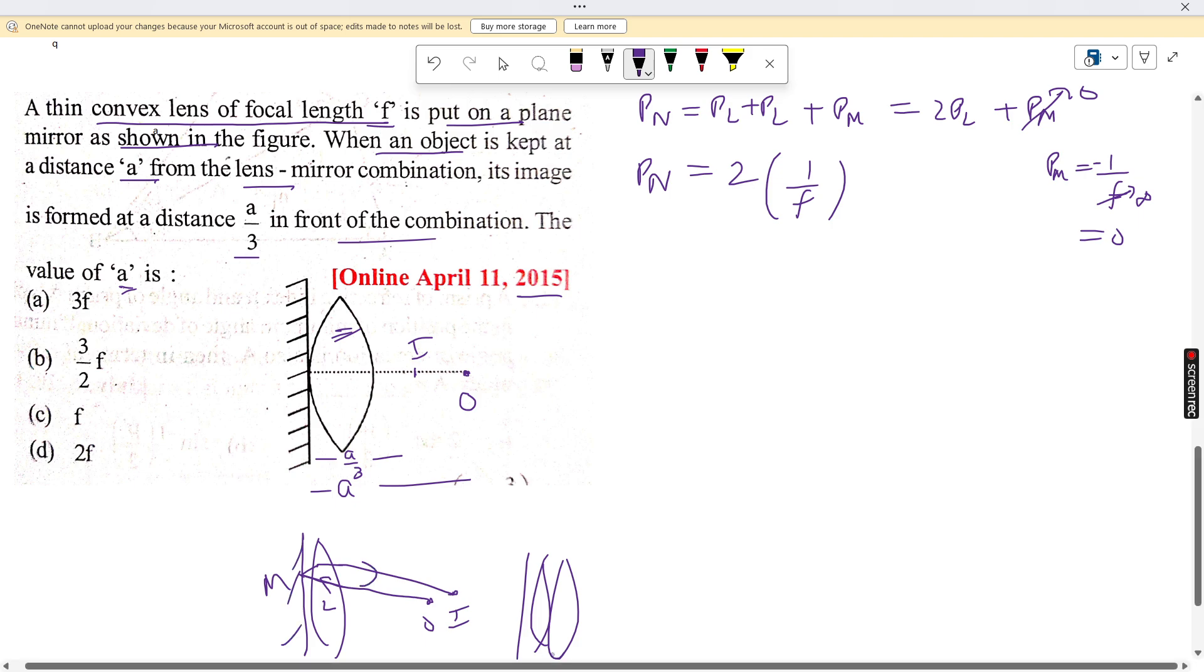So this combination behaves like a mirror. We can use the mirror formula: 1/v + 1/u = 1/f.